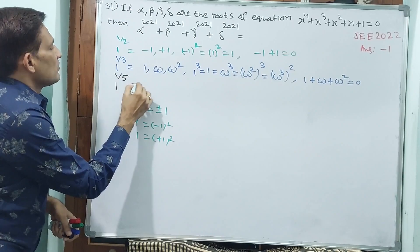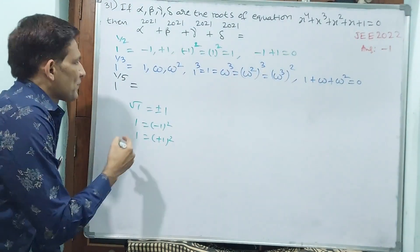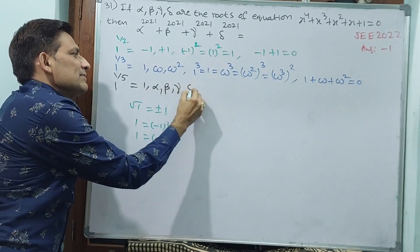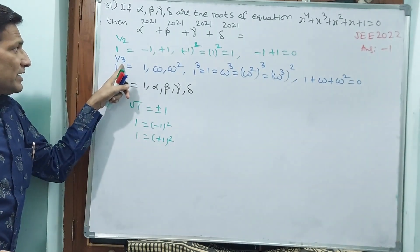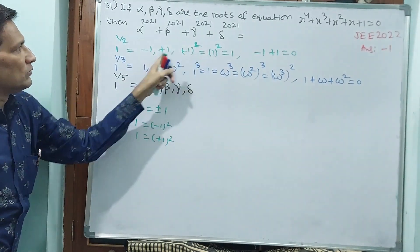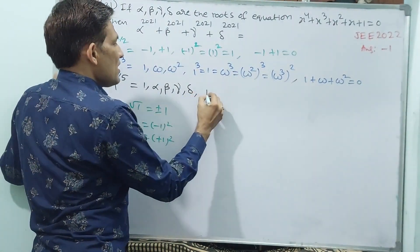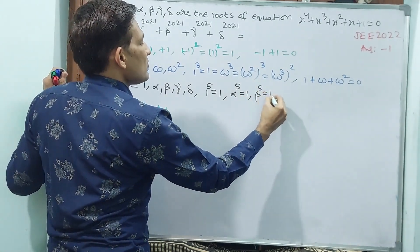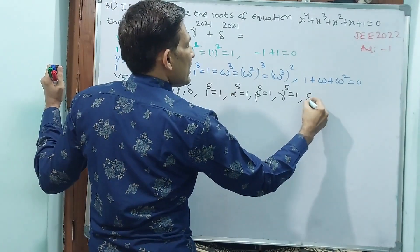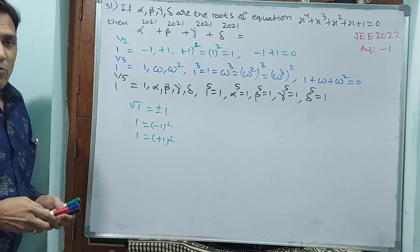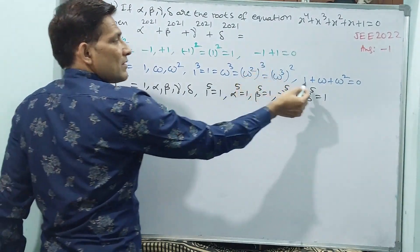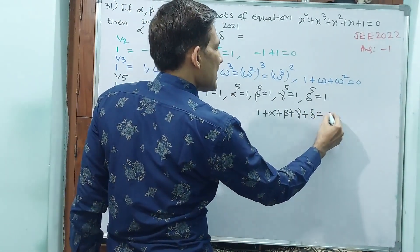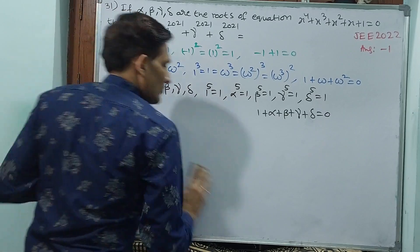Now I am taking the fifth root: 1 to the power 1 by 5. Like earlier, 1 will come as one root, and the remaining 4 roots I will call alpha, beta, gamma, delta. Here the total is 5. Note also that 1 to the power 5 is equal to 1. And one more important thing: just like 1 plus minus 1, and 1 plus omega plus omega square equals 0, here also 1 plus alpha plus beta plus gamma plus delta equals 0.